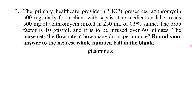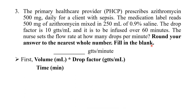Read the question carefully. The key phrase is: 'the nurse sets the flow rate at how many drops per minute.' When a question asks for drops per minute, always use the formula: volume ÷ time × drop factor. If the question asked for mL per hour, you would use dose ordered ÷ dose in hand × quantity — but here, use volume ÷ time × drop factor.